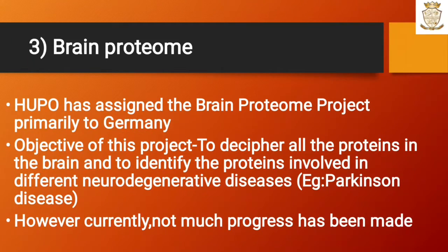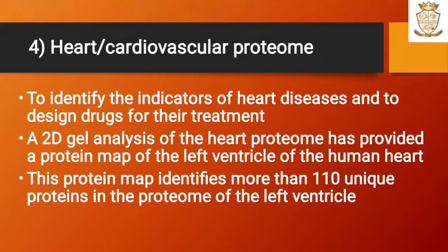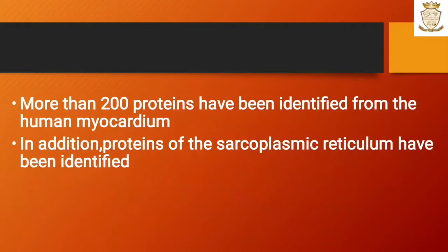The fourth one is heart cardiovascular proteome. The aim is to identify indicators of heart diseases and to design drugs for their treatment. A 2D gel analysis of the heart proteome has provided a protein map of the left ventricle of the human heart, identifying more than 110 unique proteins. More than 200 proteins have been identified from the human myocardium, and proteins of the sarcoplasmic reticulum have also been identified.